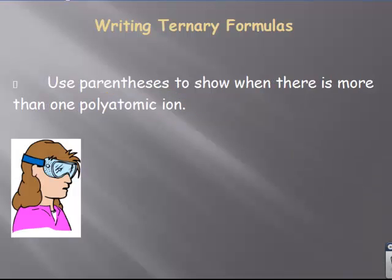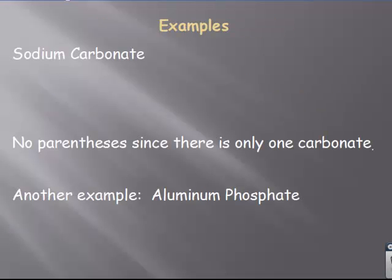So what we do then is we use parentheses whenever we have more than one polyatomic ion. If you only have one polyatomic ion, it's not correct to leave the parentheses there. And I'll get to that as we get to the examples here. So first one, so it's the same two rules. First you write the formula for the positive and the charge. Then you write the formula for the negative and the charge. If the charges are already balanced, you have the formula. If the charges aren't balanced, you cross them down.